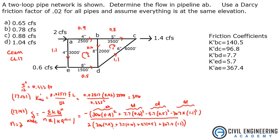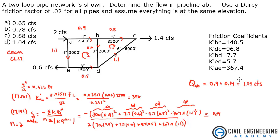Summing all those values and dividing gives a delta correction factor of 0.1414 for loop ABDE. To get Q for AB, we apply that correction. Since we assumed clockwise flow, we add it to our assumed value: 0.9 plus 0.14 gives 1.04 CFS. That is answer D.